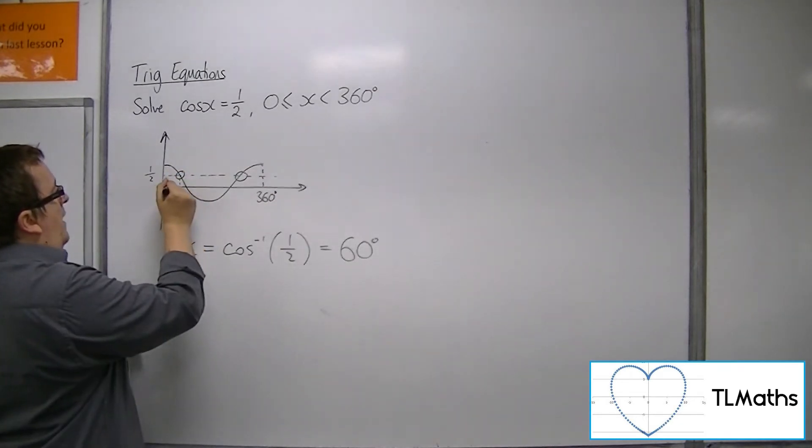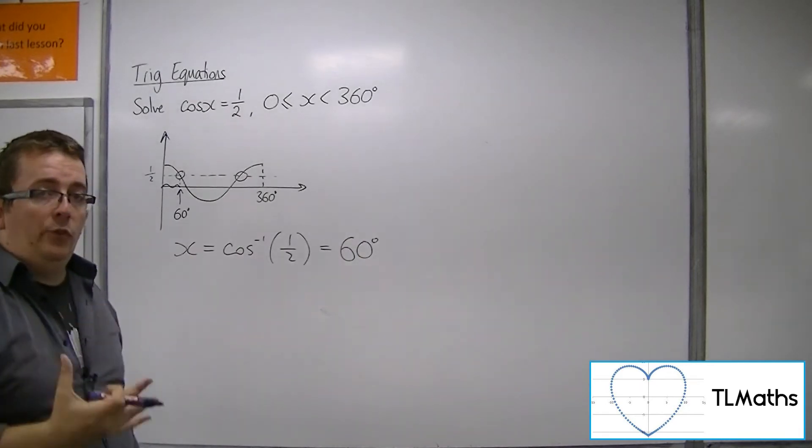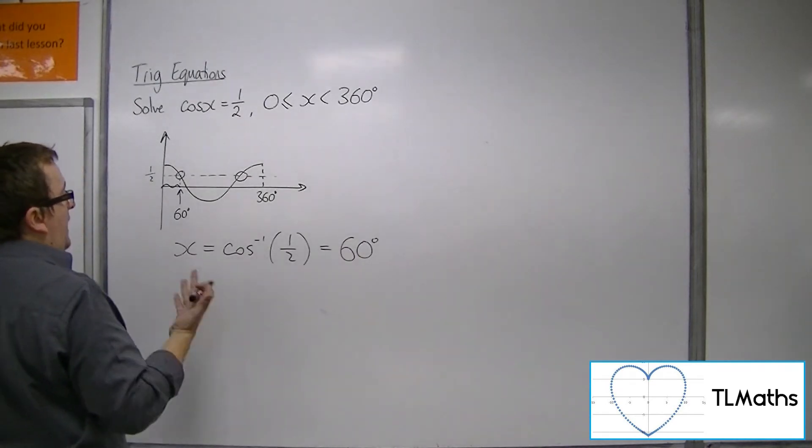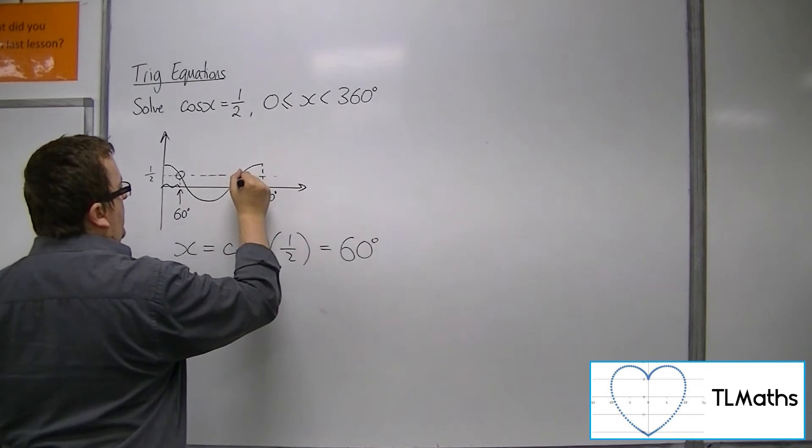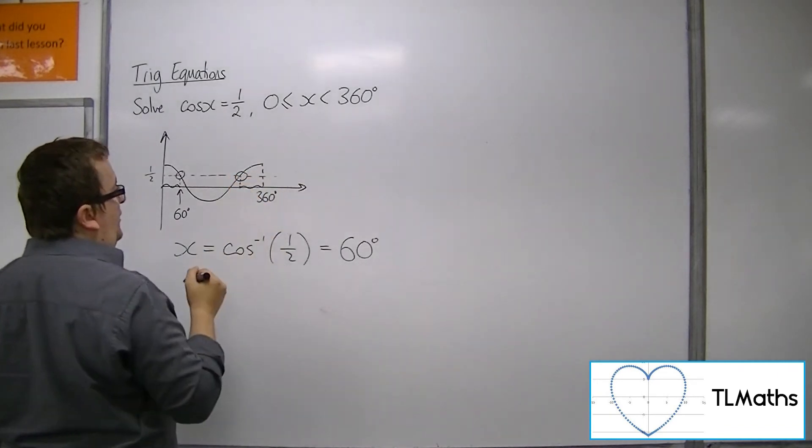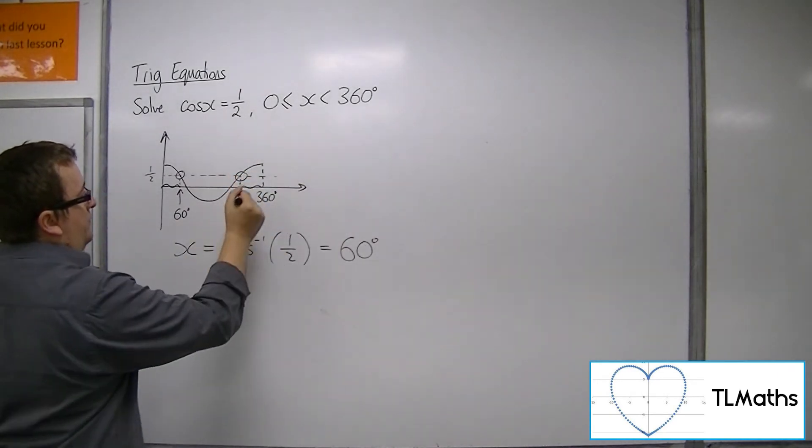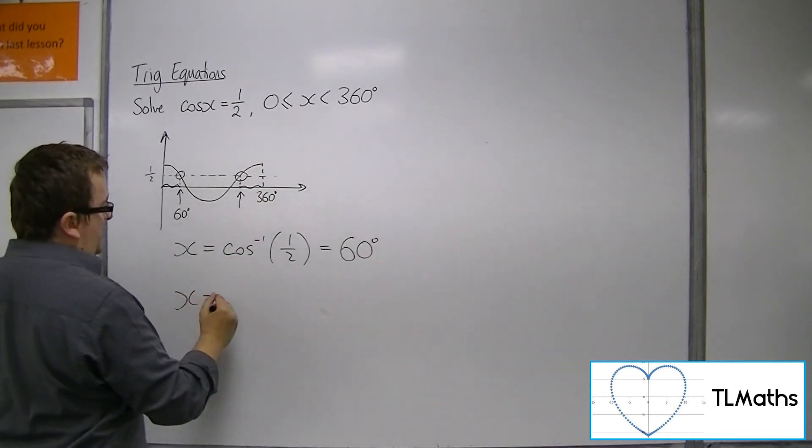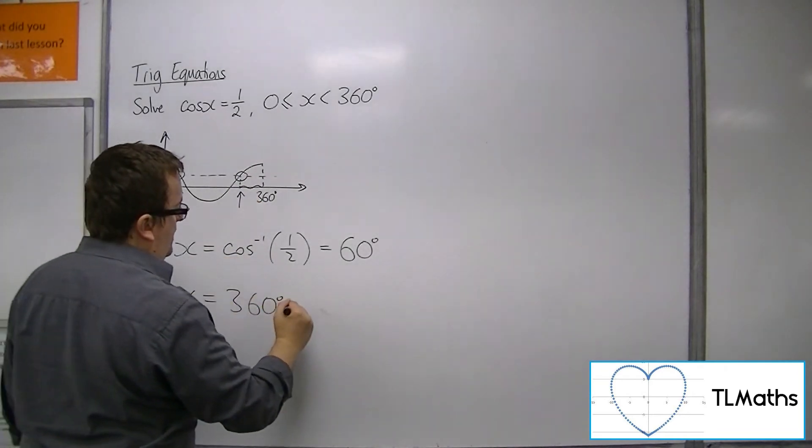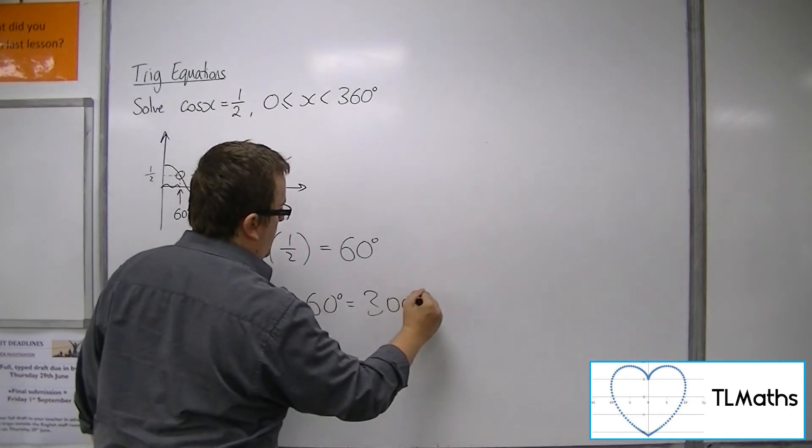Now that distance there is 60 degrees. The cosine curve is also symmetric, has that symmetry. And so this point is 60 degrees away from 360. So the second solution is 360 minus 60, which is 300.